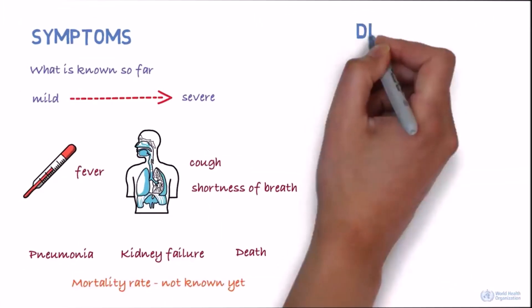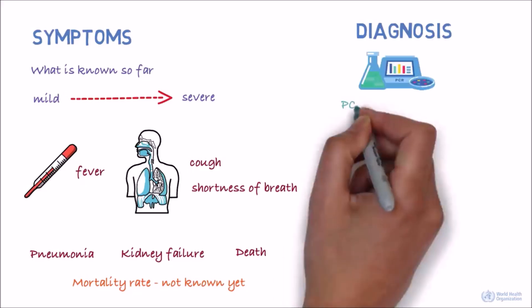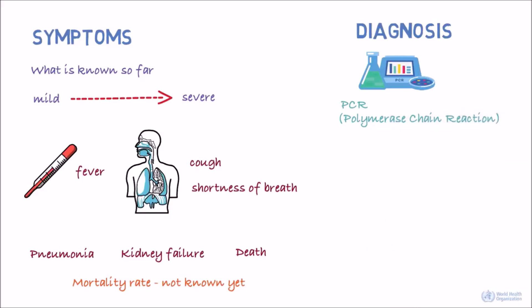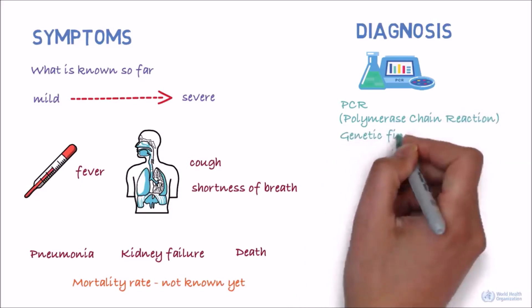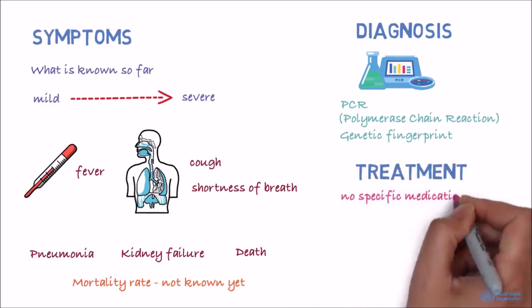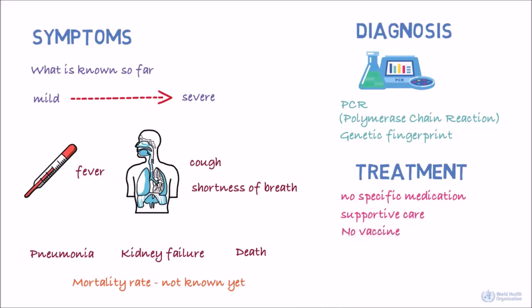How can we tell whether someone is infected? The infection can be diagnosed by a test called PCR or polymerase chain reaction. This test identifies the virus based on its genetic fingerprint. There's currently no specific medication for the virus and treatment is supportive care. There's currently no vaccine to protect against the virus. Treatment and vaccines are in development.